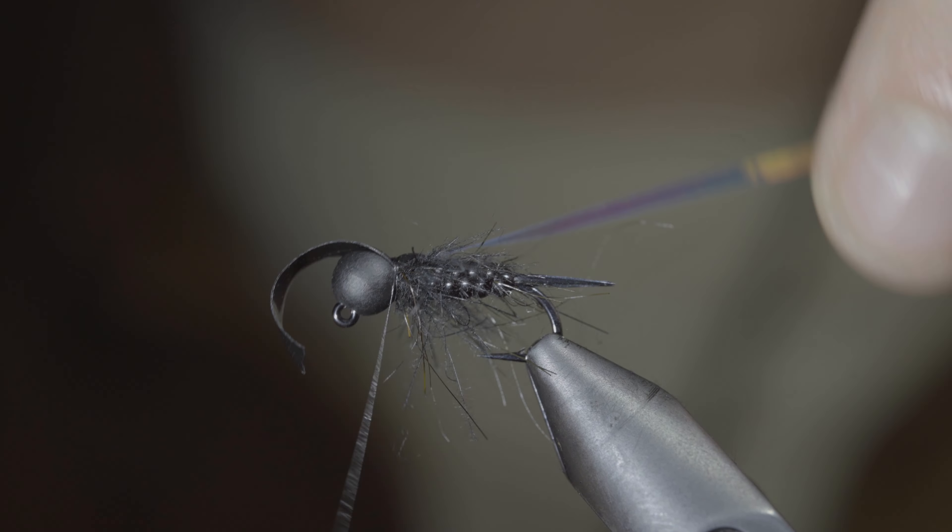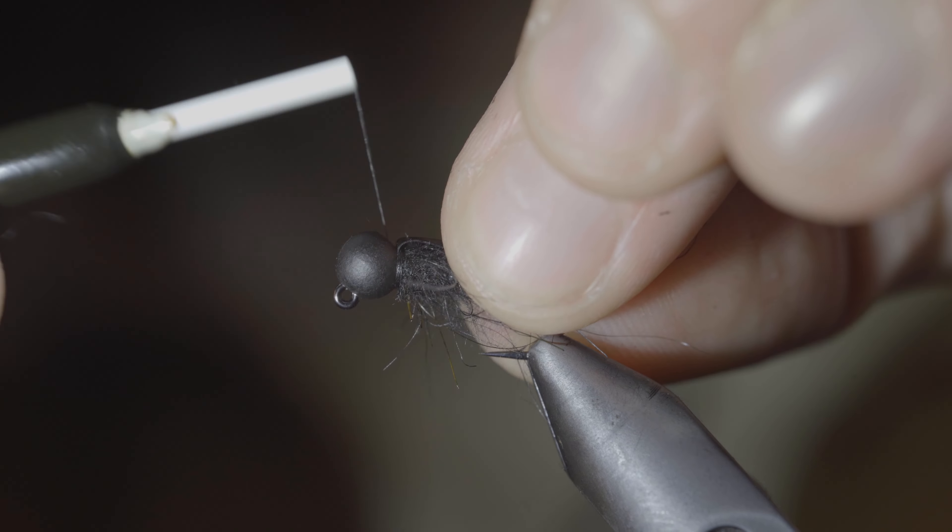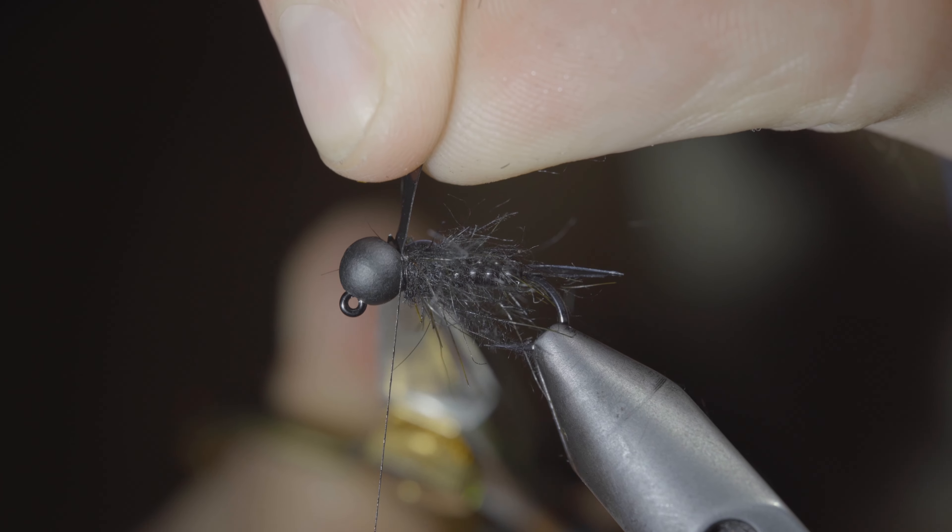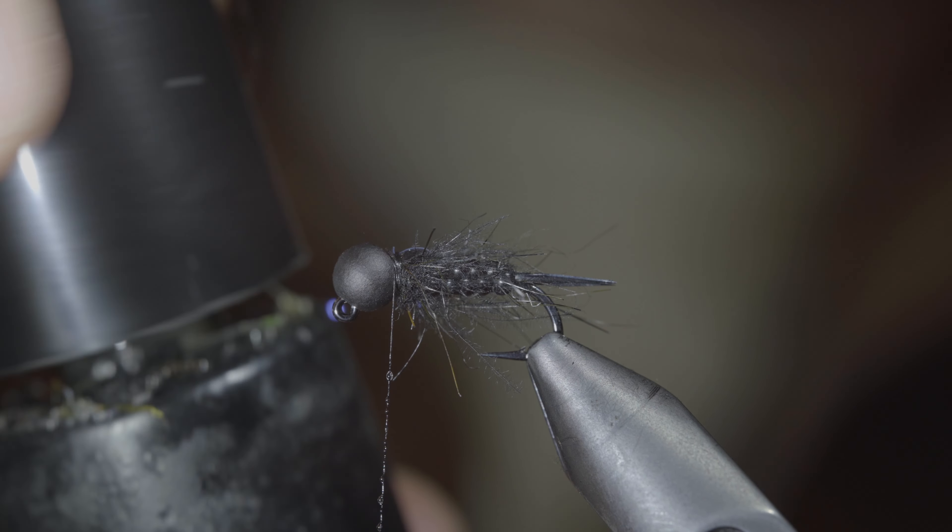Fold over your thin skin, secure it tightly in place, followed by our flash. Secure them both tightly at the head of the fly, securing both in front as well as behind, before closely snipping them free.